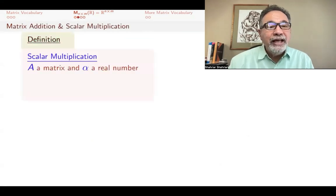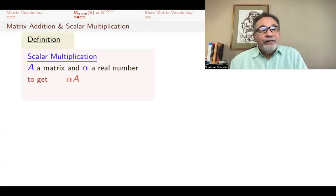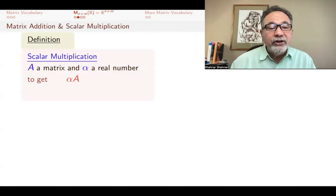How do we do scalar multiplication? If A is a matrix and α is a real number, then we find αA, that's multiplying the scalar by the matrix, by multiplying every entry of the matrix by that scalar.